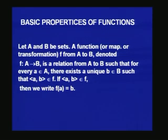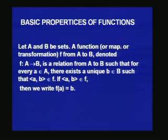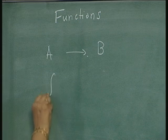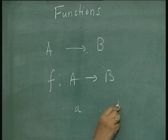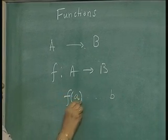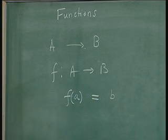Let A and B be sets. A function, or map, or transformation F from A to B, denoted F: A → B, is a relation from A to B such that for every a belonging to A, there exists a unique b belonging to B such that (a, b) belongs to F. If (a, b) belongs to F, then we write F(a) = b. It is a map or transformation where with every element of A you associate a unique element of B, and it is a particular case of a relation.